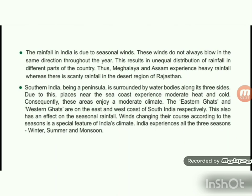The rainfall in India is due to the seasonal winds. These winds do not always blow in the same direction throughout the year, resulting in unequal distribution of rainfall in different parts of the country. Meghalaya and Assam experience heavy rainfall, whereas there is scanty rainfall in the desert region of Rajasthan. Southern India, being a peninsula, is surrounded by water bodies along three sides, so places near the seacoast experience moderate heat and cold.